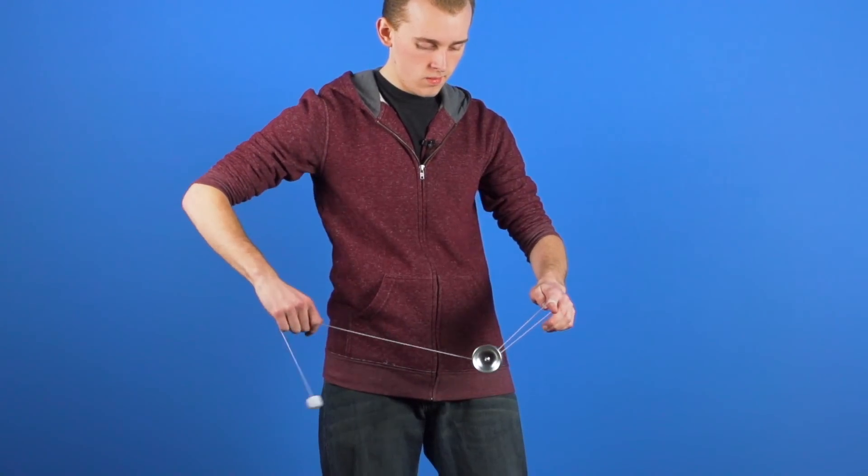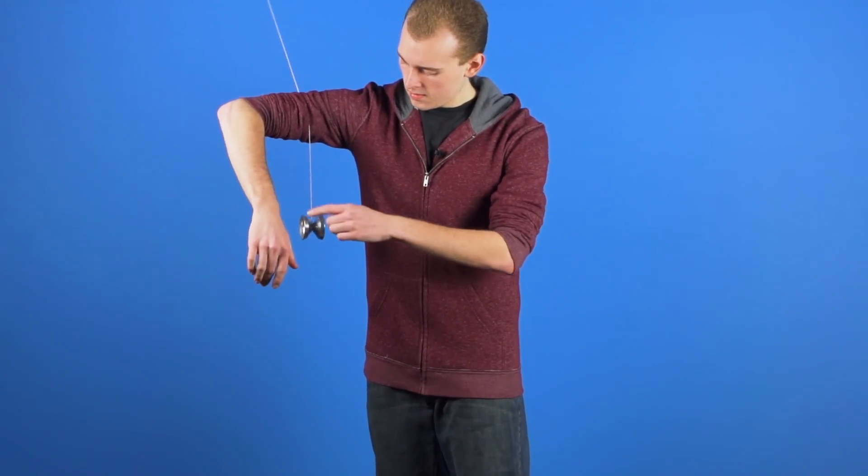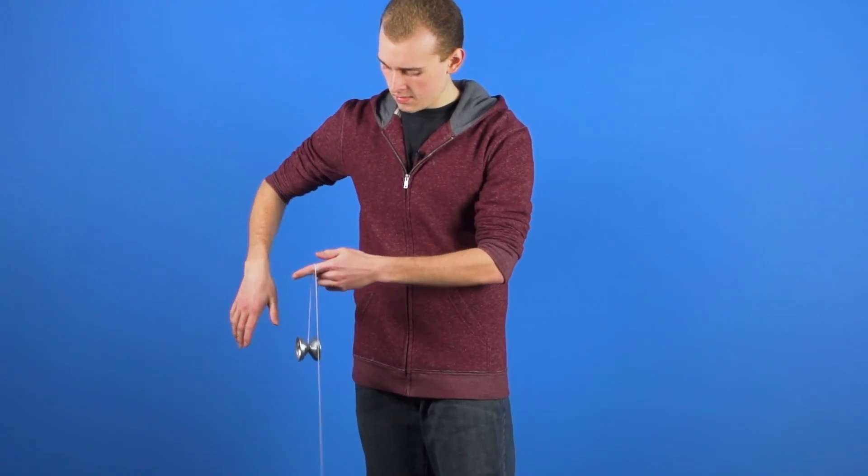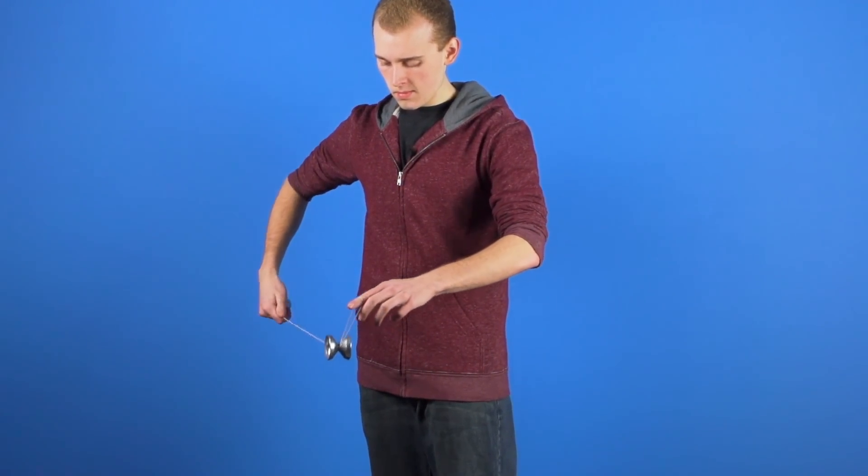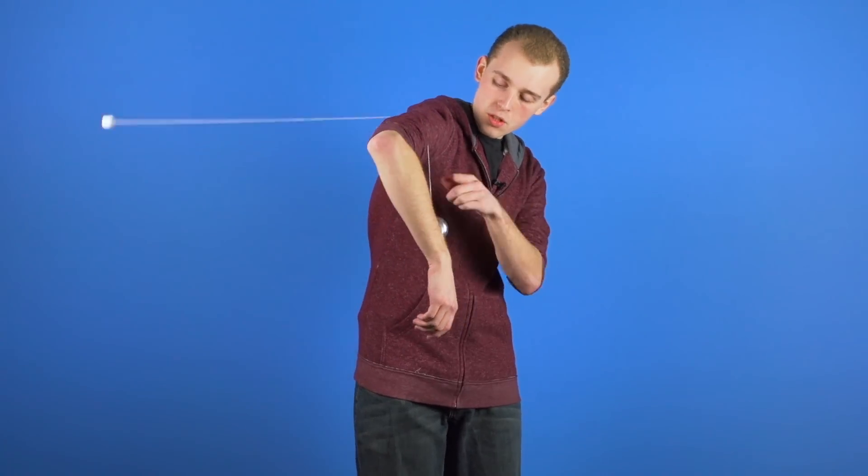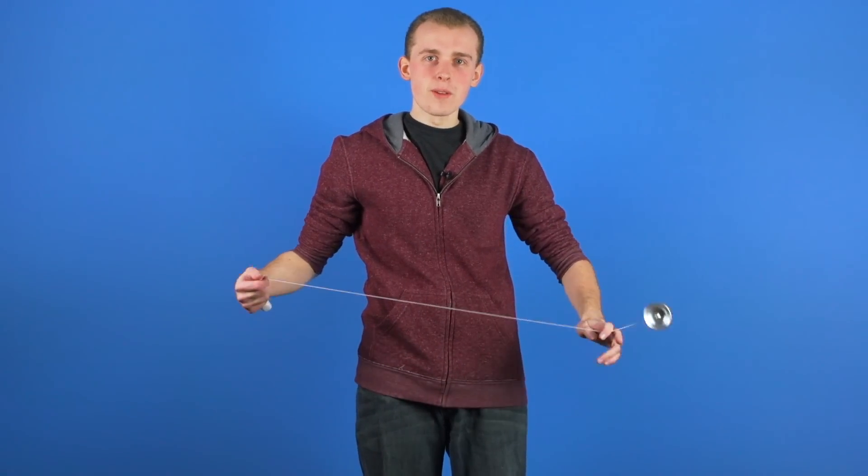So to break that down a little bit more, when the string first touches your opposite hand pointer finger, you want to make sure to pinch the string a little bit so that the yoyo doesn't fall and the counterweight can come all the way around. And that is Molten Core.